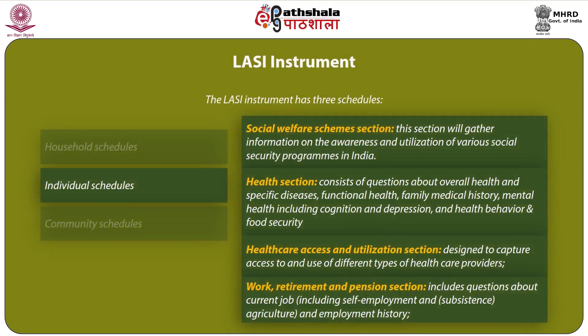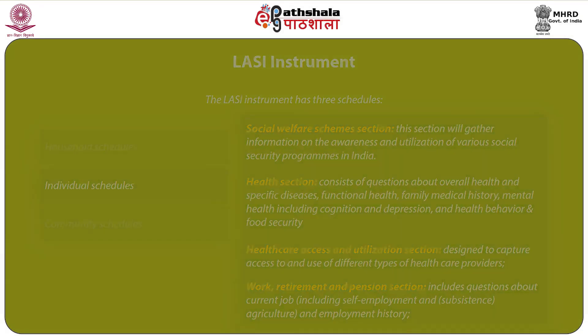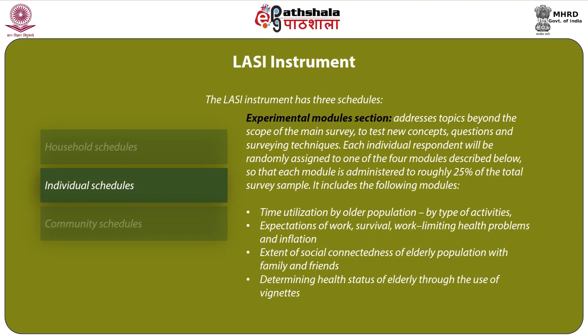The social welfare scheme section includes information on awareness and utilization of various social security programs in India. The health section consists of questions about overall health and specific diseases, functional health, family medical history, mental health including cognition and depression, health behaviour and food security. Healthcare access and utilization is designed to capture access and use of different types of healthcare providers. The work, retirement and pension section includes questions about current job including self-employment, subsistence agriculture and employment history. The experimental module section addresses topics beyond the scope of the main survey to test new concepts, questions and surveying techniques.